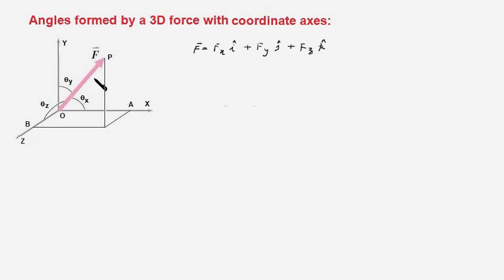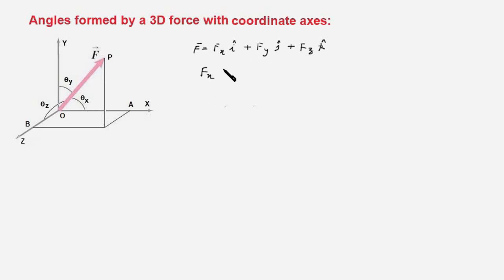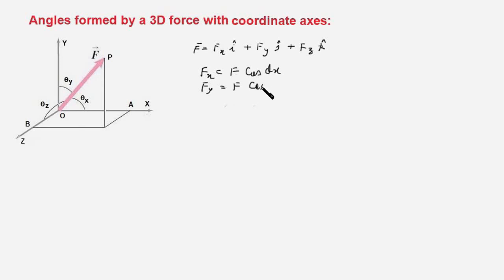Suppose you are given a three-dimensional force F in vector form: Fx·i-hat plus Fy·j-hat plus Fz·k-hat, and you are interested in finding the angles it makes with the coordinate axes x, y, z. You can write Fx = F·cos(θx), Fy = F·cos(θy), and Fz = F·cos(θz).